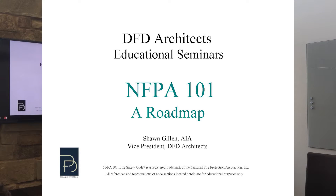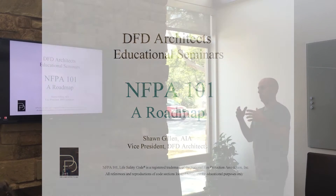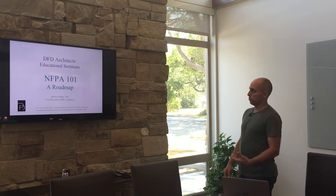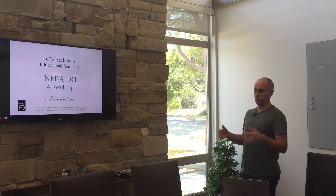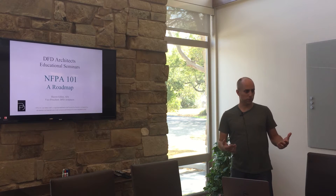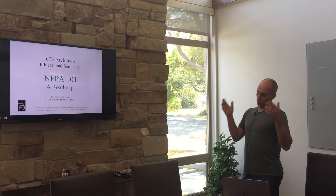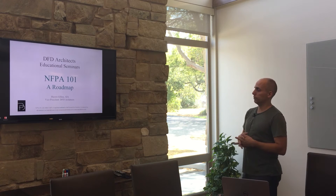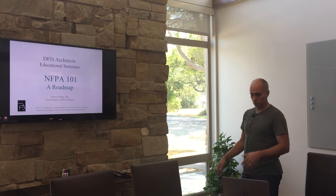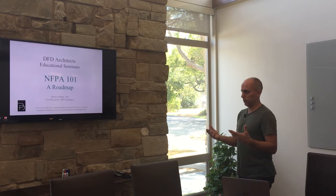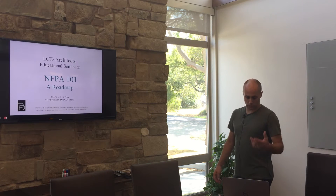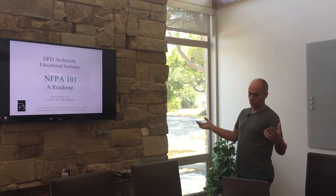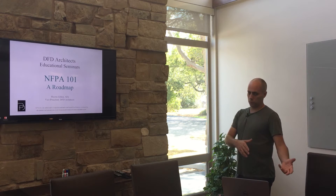This session is called 'NFPA 101: A Roadmap' — the basic guide for figuring out what applicable requirements in the Life Safety Code apply to whatever building you're working on. Most people, including inspectors, jump into the code and pick and choose sections. That's not how it works. There is a very specific order of steps you need to follow to figure out which sections actually apply.